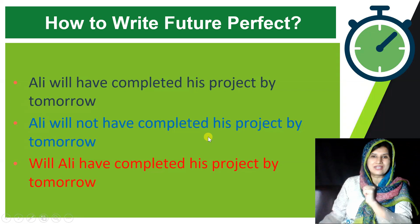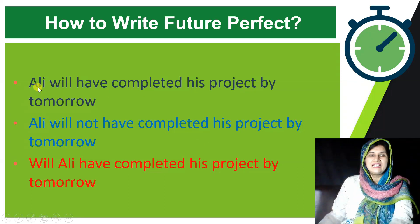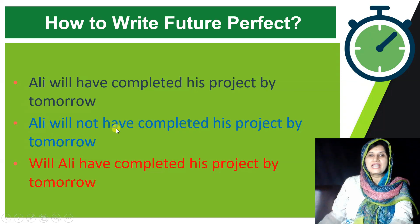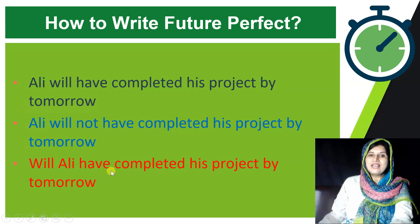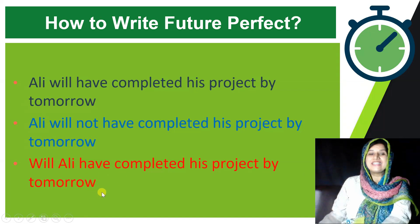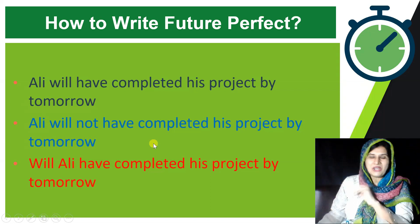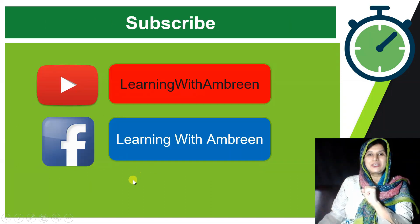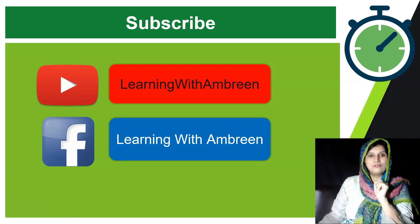For revision: 'Ali will have completed his project by tomorrow' (affirmative), 'Ali will not have completed his project by tomorrow' (negative), and 'Will Ali have completed his project by tomorrow?' (interrogative). This is how we structure the Future Perfect Tense. Thank you for listening — for any queries, comment below and I'll answer. See you in the next lecture!